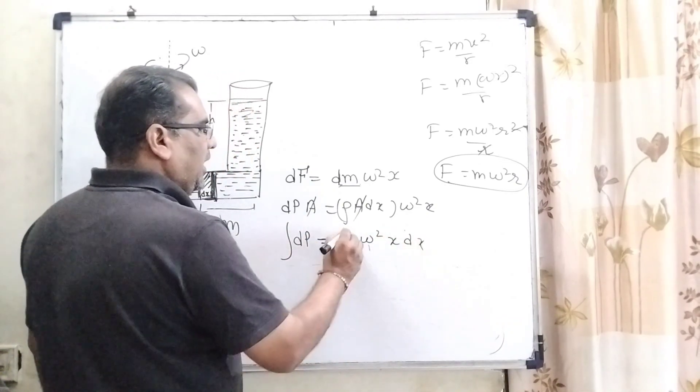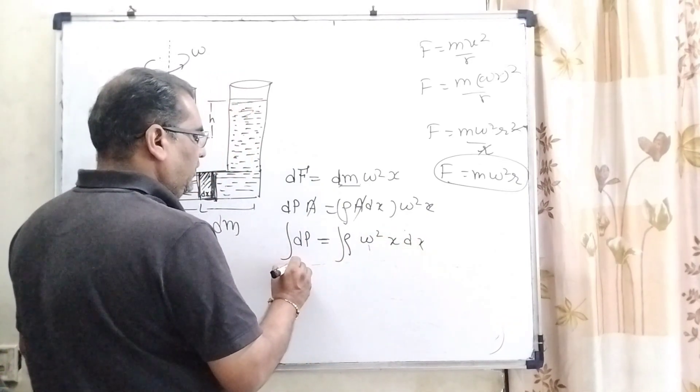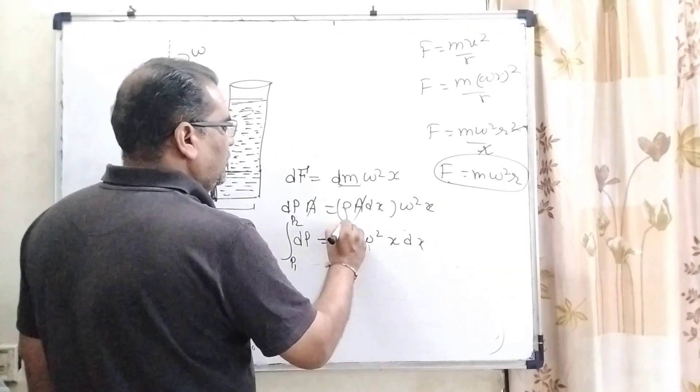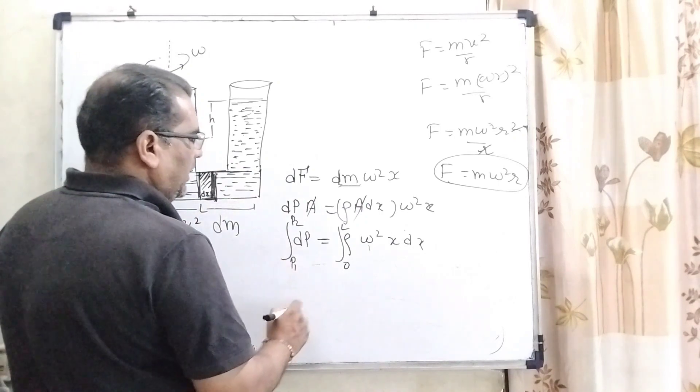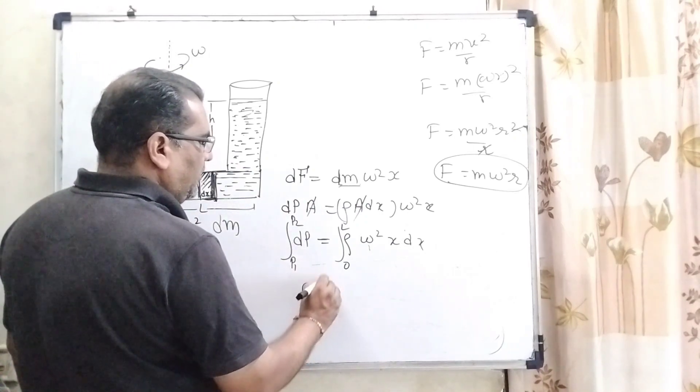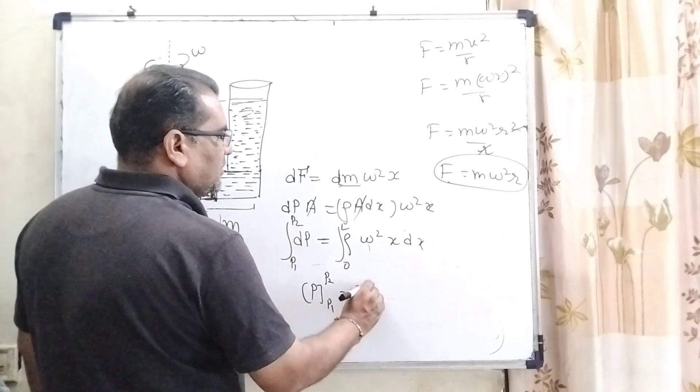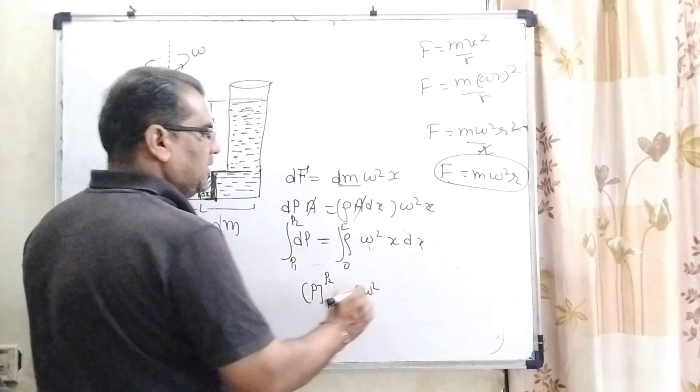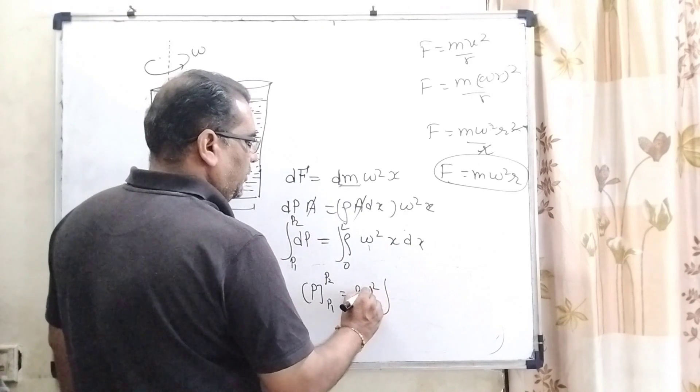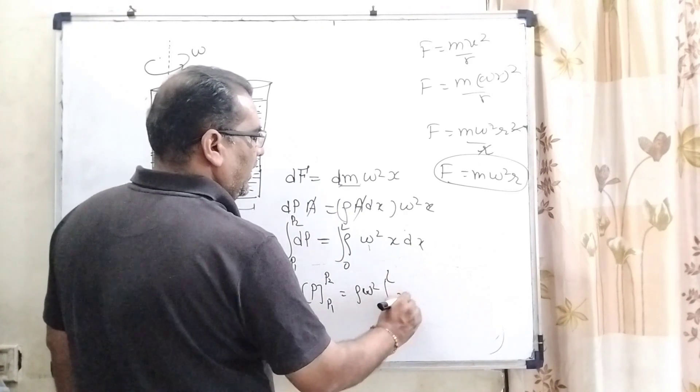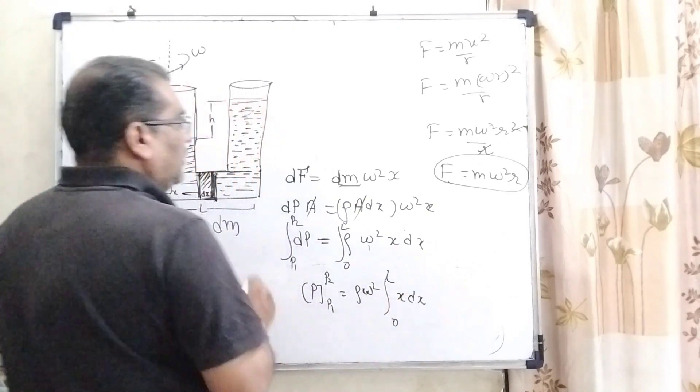Here, applying integration with limits P1 and P2. The limit is 0 to L, total length 0 to L. Then dP can be written as P, upper limit P2, P1, rho omega square - that is a constant term, so we put it outside the integration: 0 to L x dx.